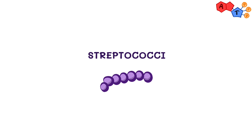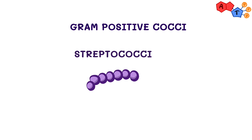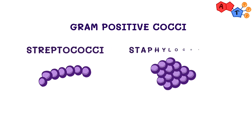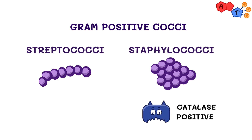As a quick review, just so you can keep the big picture in mind: gram positive cocci are either strep or staph. Do you remember how to differentiate them? That's right — staph is catalase positive while strep is catalase negative.